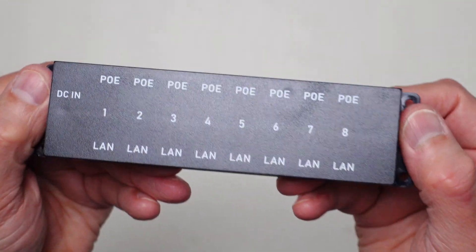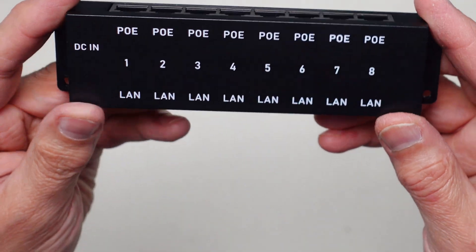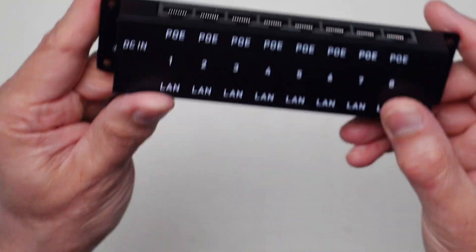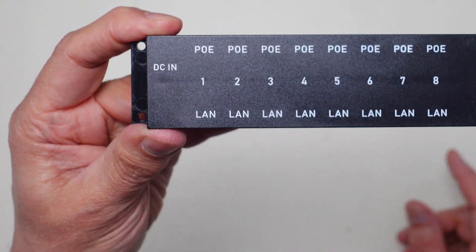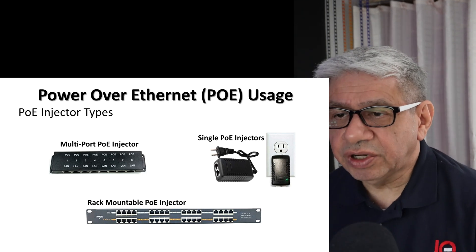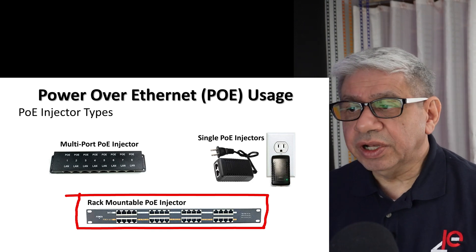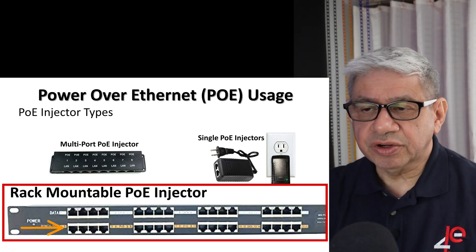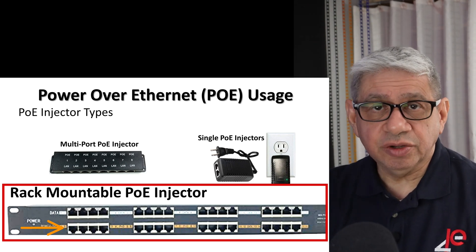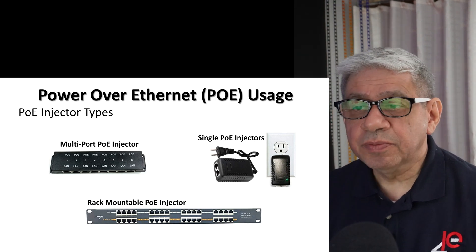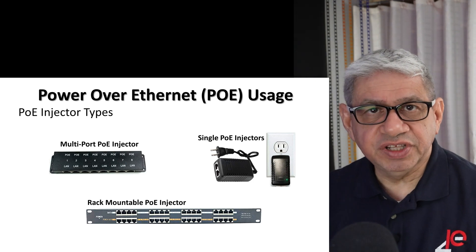One disadvantage of the low-cost 8-port injector is that it only supports Ethernet speeds up to 100 megabits. More expensive versions can go up to one gigabit and beyond. There are also rack-mounted PoE injectors with 16 ports — the top ports connect to your switch via jumper cables or a distribution panel, and the bottom ports go to the devices being driven for both data and power.